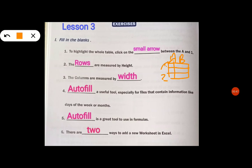There will be a small arrow. If you click it, then the whole table will be highlighted. Second one: the rows are measured by height. So this is the row 1, 2, 3. So this one is measured using height.